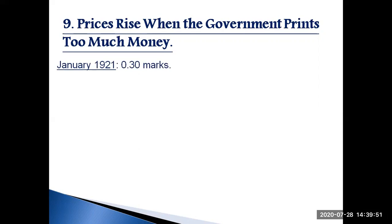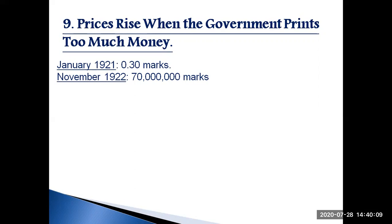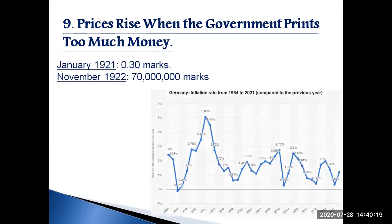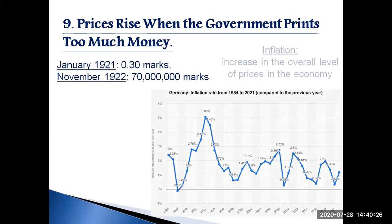In January 1921, a daily newspaper in Germany cost 0.30 marks. Less than two years later, in November 1922, the same newspaper cost 70,000,000,000 marks — a big jump. All other prices in the economy rose by similar amounts. This episode is one of history's most spectacular examples of inflation — an increase in the overall level of prices in the economy.